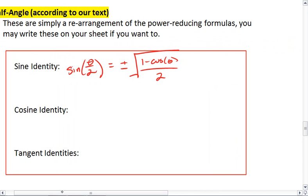Now let's look at the other ones. For cosine, we get that cosine of theta over 2 equals plus or minus the square root of 1 plus cosine theta, all over 2.